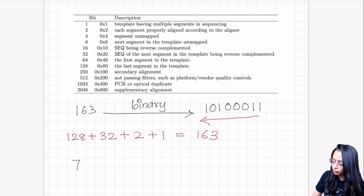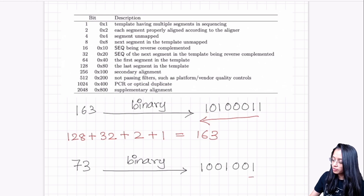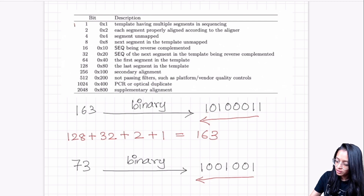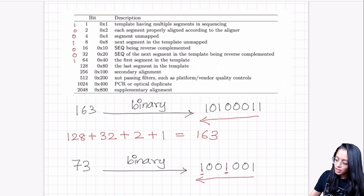Let's take another example. One of the reads had a SAM flag value of 73. We first convert 73 to binary, which gives 1001001. Going from right to left, we write each digit into the table rows: 1, then two zeros, then another 1, then two zeros, then a final 1.